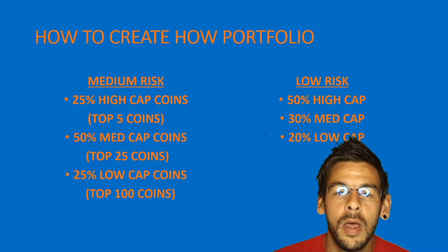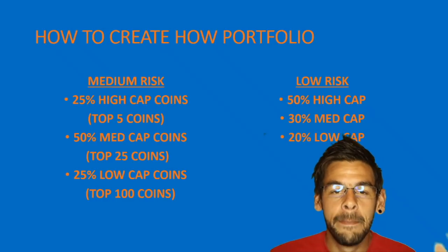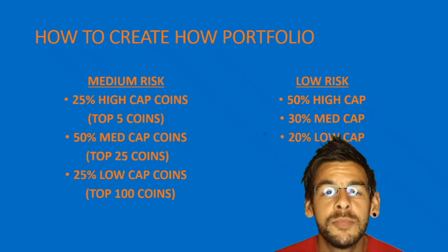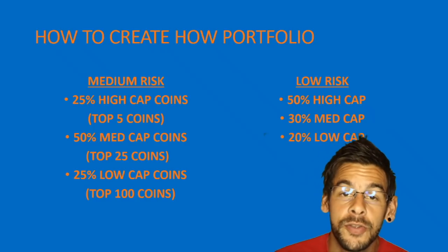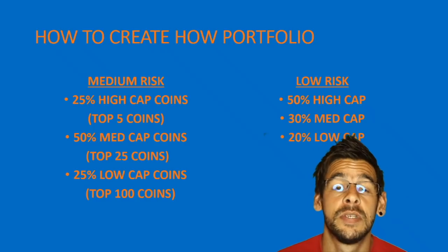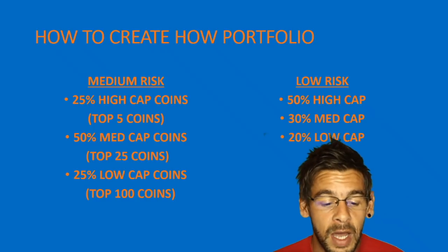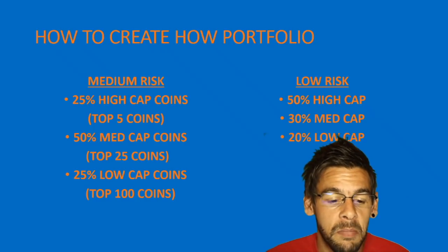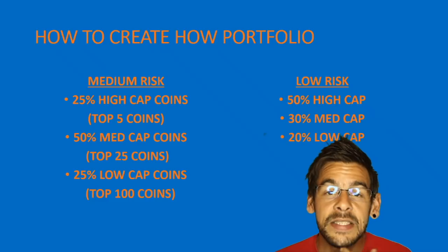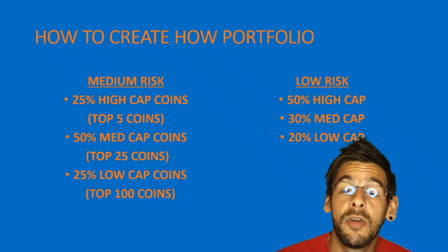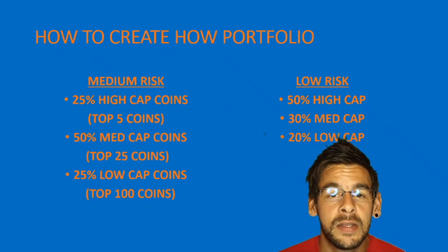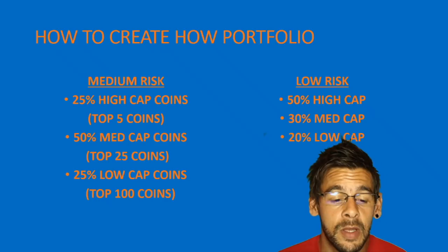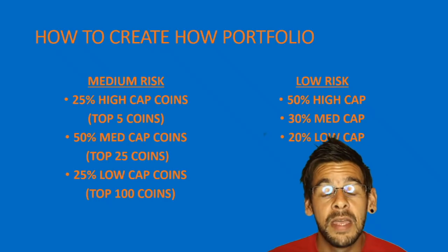Here are two of many different ways to build a portfolio. The first is a medium risk approach — something I came across in Datadash's videos and other YouTubers — which recommends 25% of your entire portfolio being invested in the top five coins.